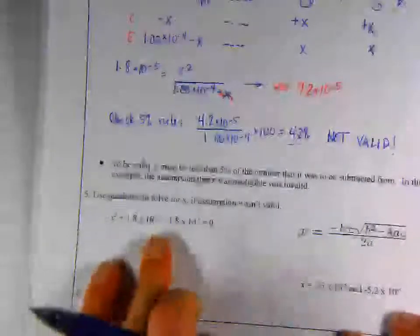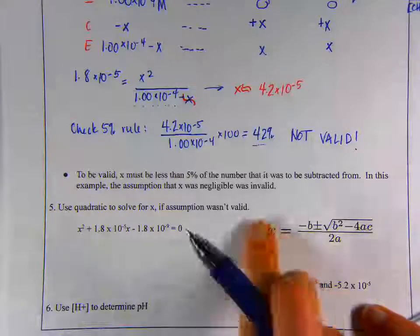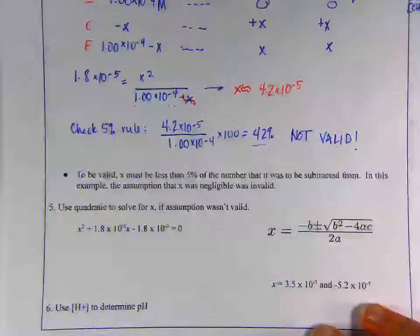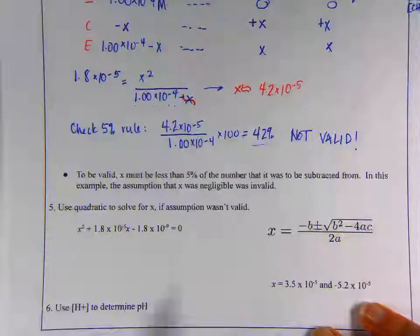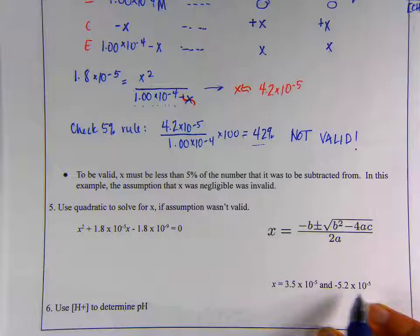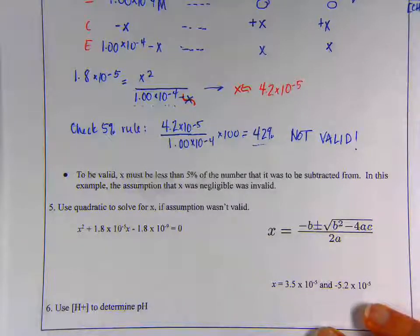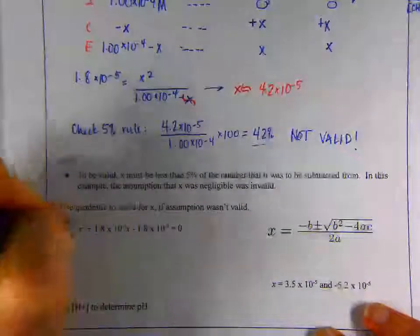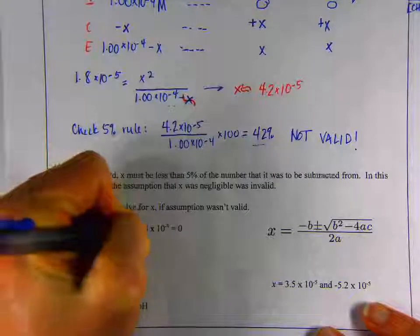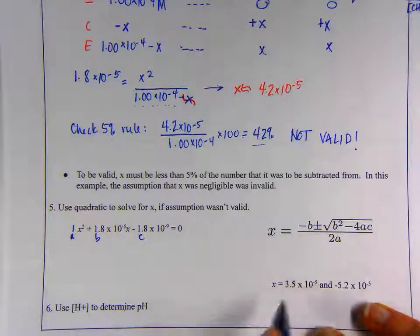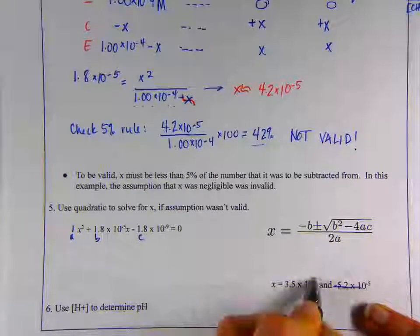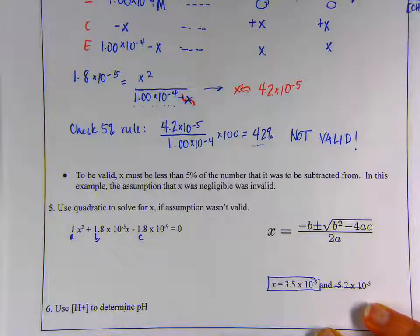In order to solve the quadratic, I'm not going to make you do it all the way in your notes. I've kind of worked some of it out for you. Here's the quadratic equation. You'd have to solve for your two different values of X. What you get is X equals 3.5 times 10 to the negative 5 and negative 5.2 times 10 to the negative 5. We can't have a negative X value. That doesn't make any sense. So the X value that we would go with is here, 3.5 times 10 to the negative 5. This is my legitimate X value.